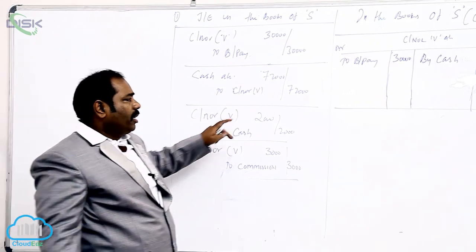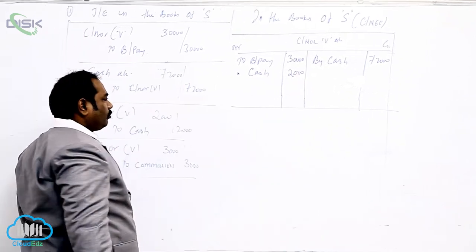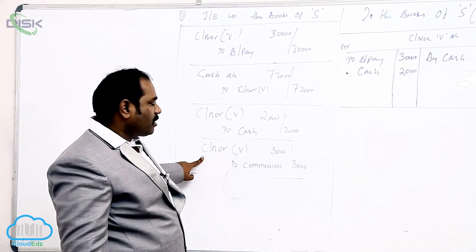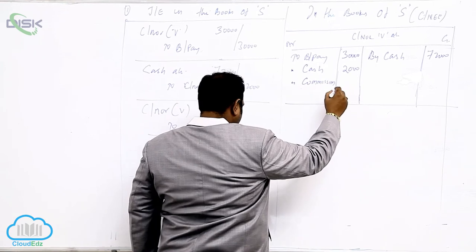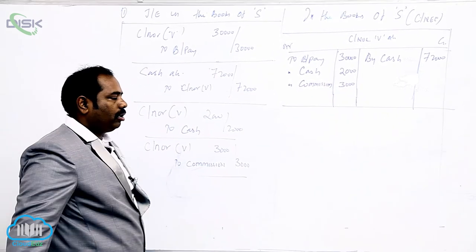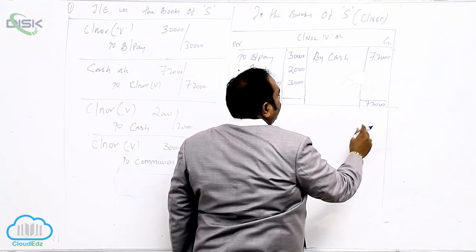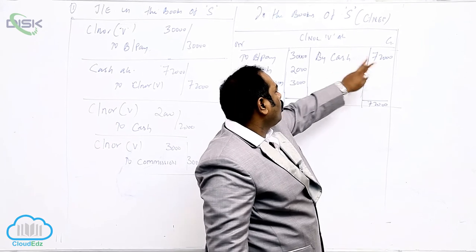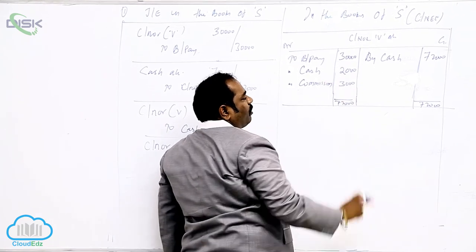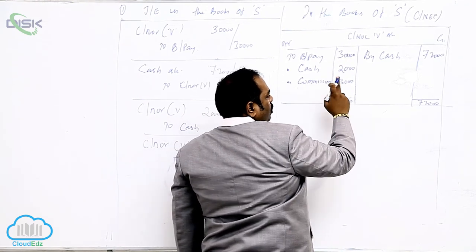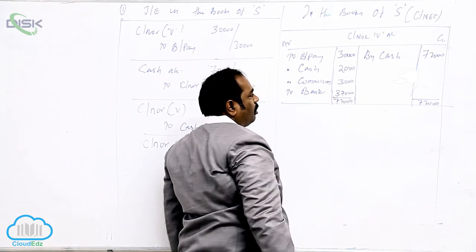For commission: Consignor Account Dr to Commission — debit side ₹3,000. After writing all entries, the credit side total is ₹72,000 and the debit side totals ₹30,000 + ₹2,000 + ₹3,000 = ₹35,000, leaving a balance of ₹37,000 payable to the consignor. Entry for settlement: Consignor Account Dr to Bank — ₹37,000.